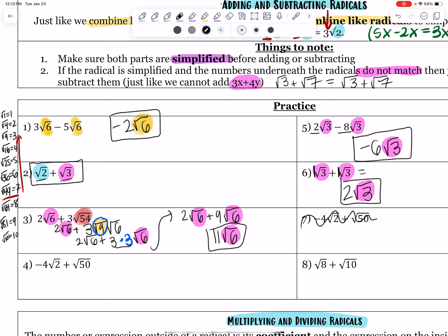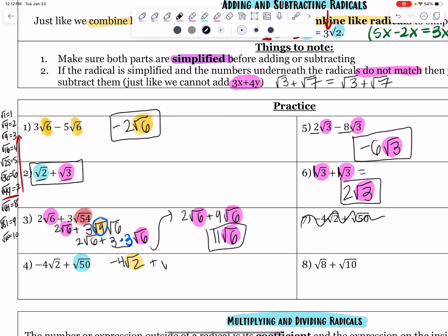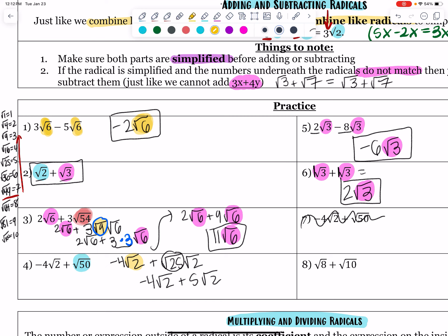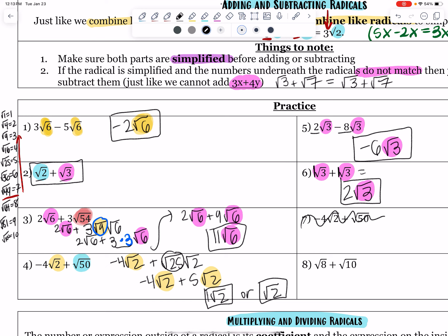On number 4, I have negative 4 root 2. Root 2 is fully simplified but currently does not match root 50. So let's simplify root 50 — there are perfect square factors. That's root 25 times root 2. Now I have negative 4 root 2 plus 5 root 2. Combining those gives positive 1 root 2, and another way to write that is just root 2. You don't have to write the understood 1.